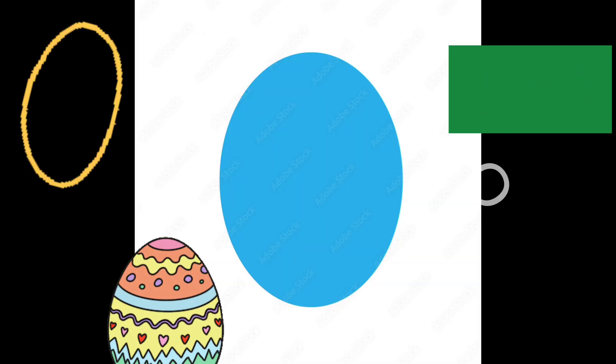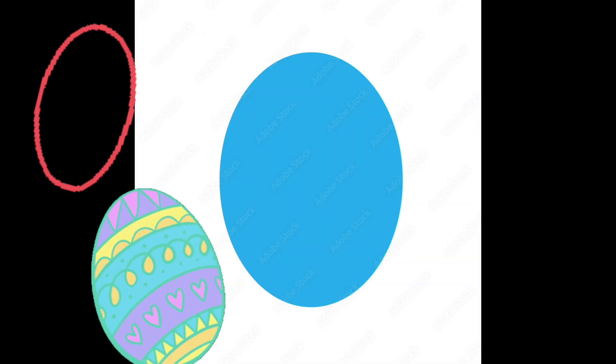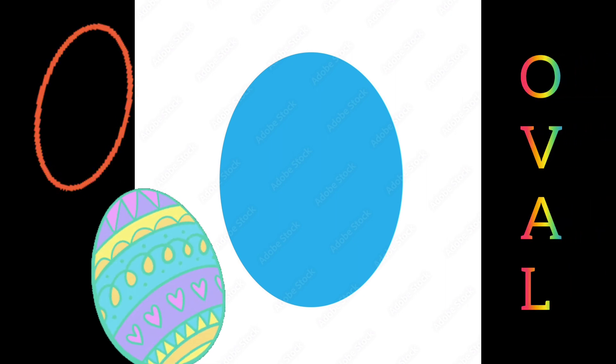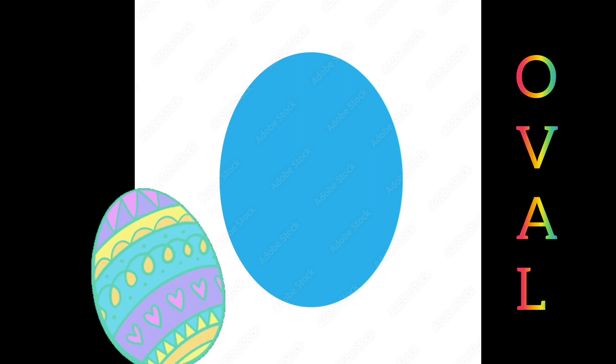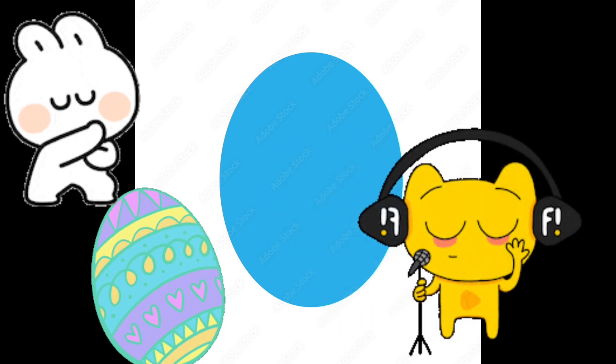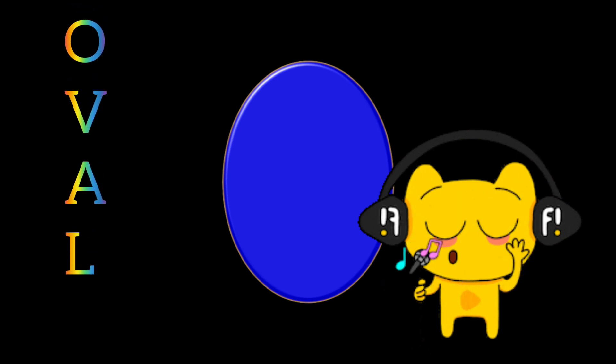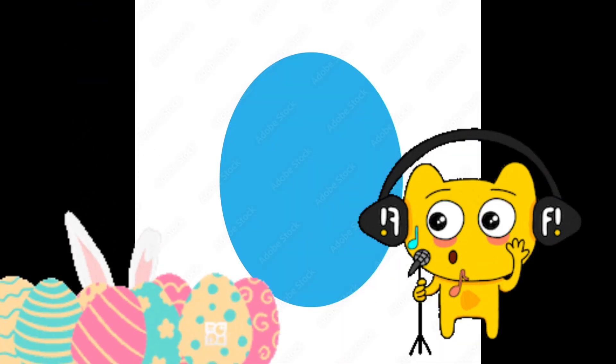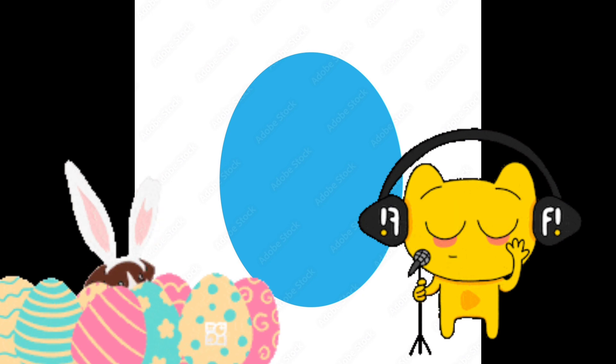It resembles like an egg, it looks like an egg. This shape does not have corners, it's an oval. It resembles like an egg. It's an oval.